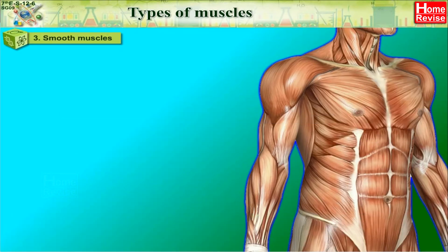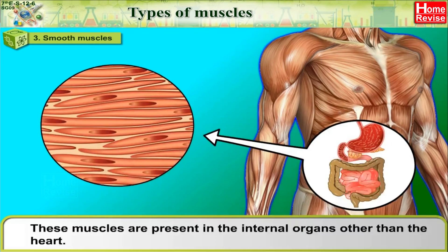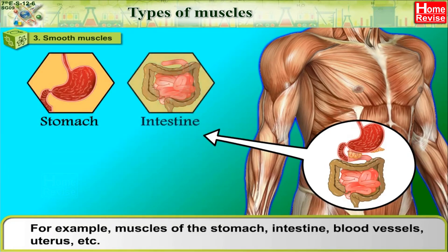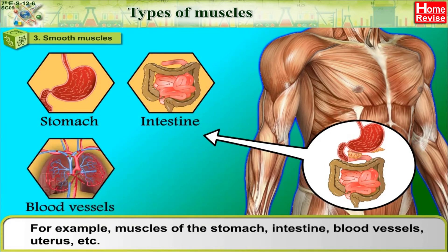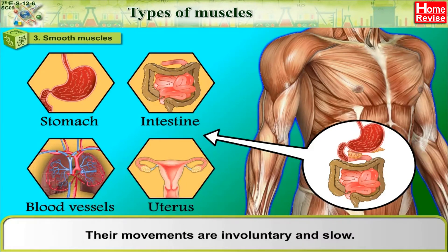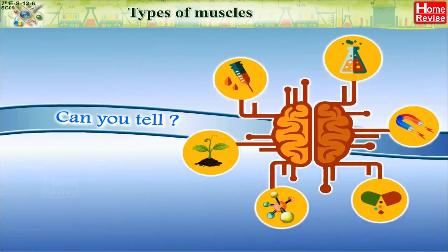3. Smooth Muscles — these muscles are present in the internal organs other than the heart. For example, muscles of the stomach, intestine, blood vessels, uterus, etc. Their movements are involuntary and slow. The vital functions of our body, of which we remain quite unaware, are carried out by these special muscles.